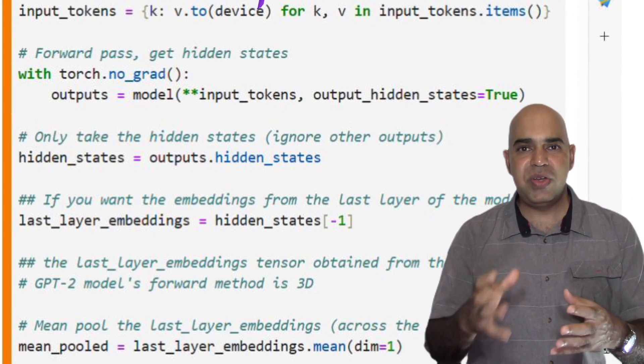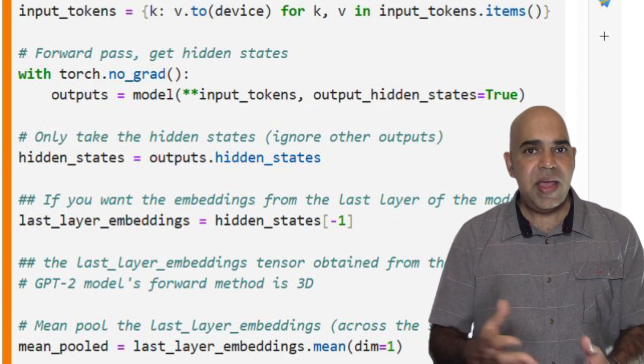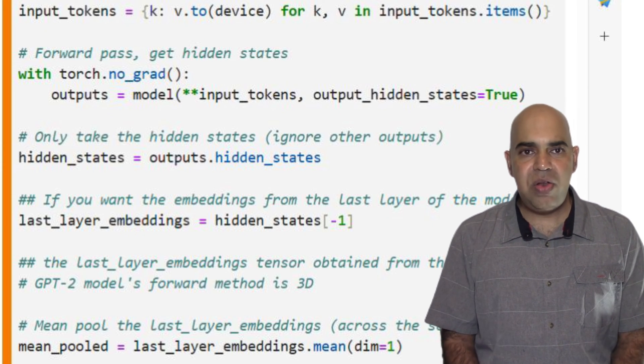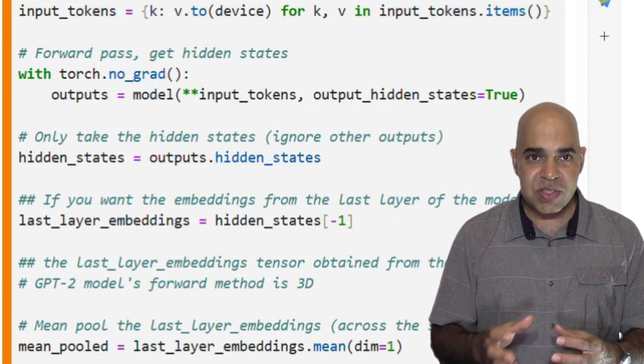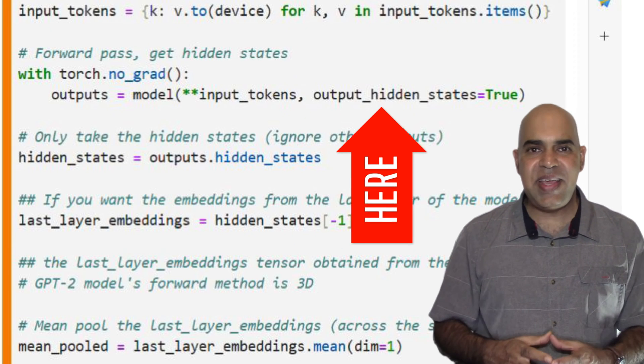I tell PyTorch not to track or modify gradients during this process as it is a forward pass only. I am passing the tokens for the input text through the model and asking the model to provide the hidden states.